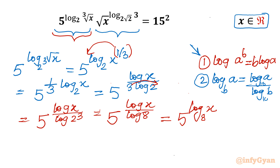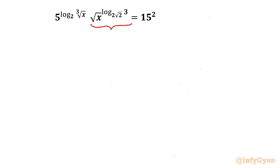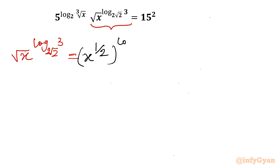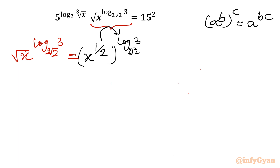Now let us find the second simplification. For the term (√x)^(log 3 base 2√2), I write √x as x^(1/2). So we have (x^(1/2))^(log 3 base 2√2). Using the exponent property (a^b)^c = a^(bc), I take the product of the two powers to get x^((1/2)·log 3 base 2√2).